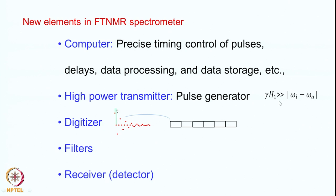This is unlike the slow passage experiments where the amplitude is very small. In slow passage, gamma squared H1 squared T1 T2 must be much smaller than 1 to avoid saturation. But here that is not the case — you excite all the spins in one go, and that is achieved by using a very high power H1.